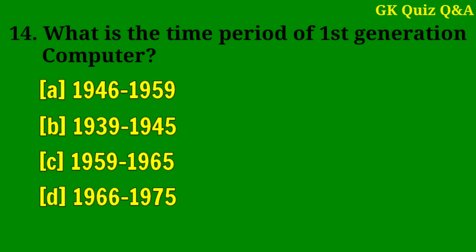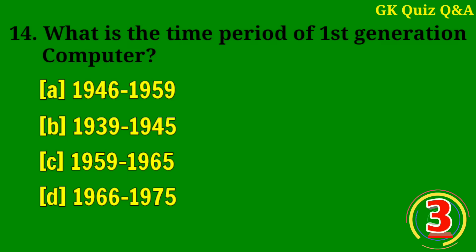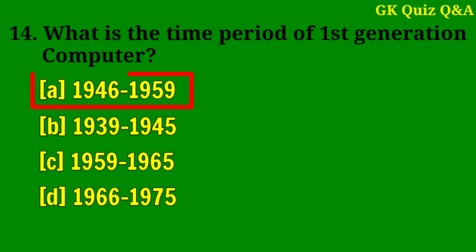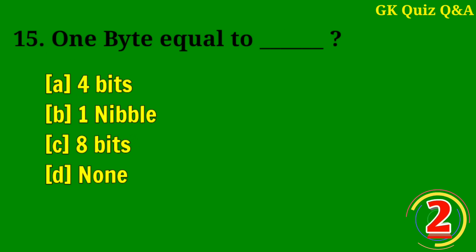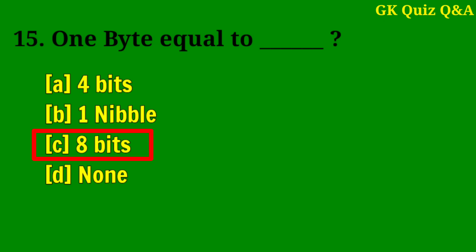What is the time period of first-generation computers? Answer A: 1946 to 1959. One byte is equal to? Answer C: Eight bits.